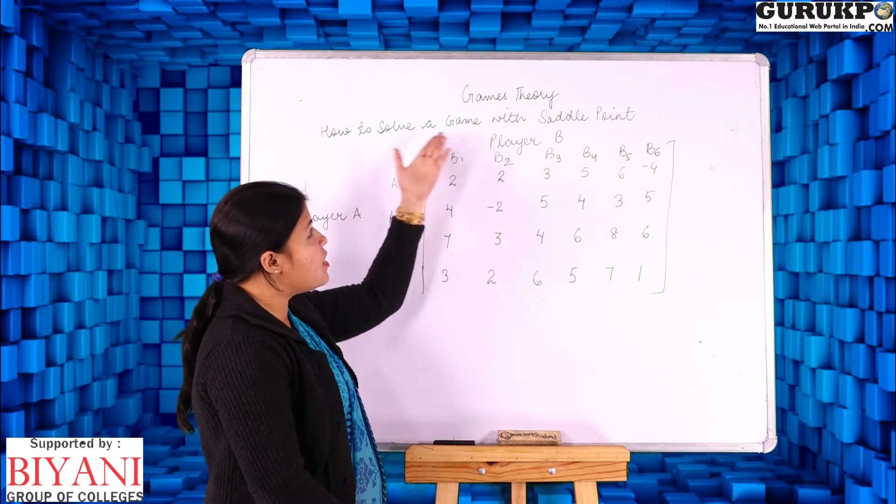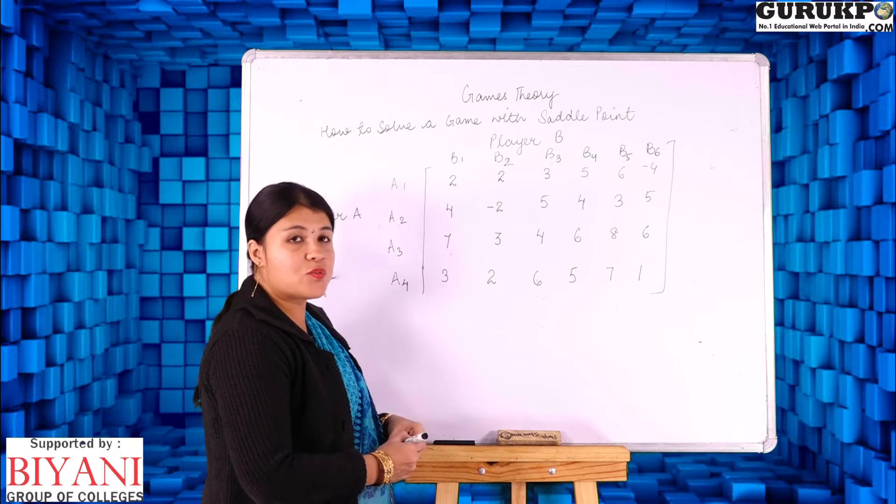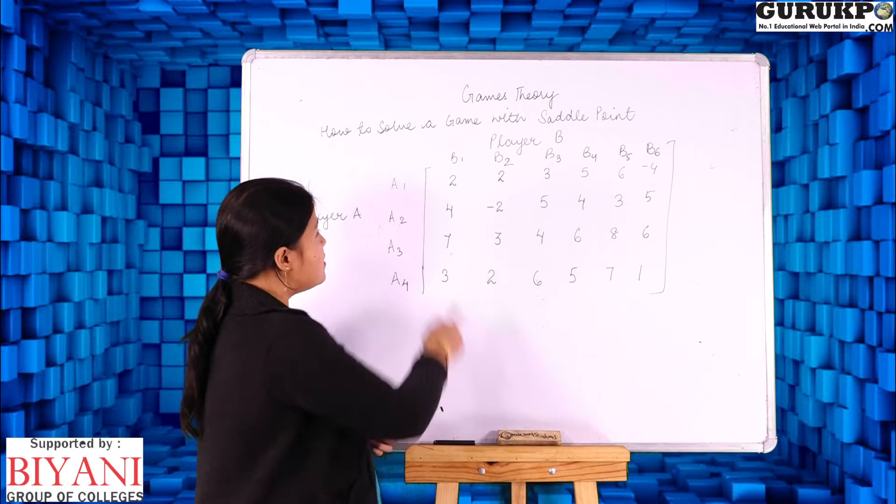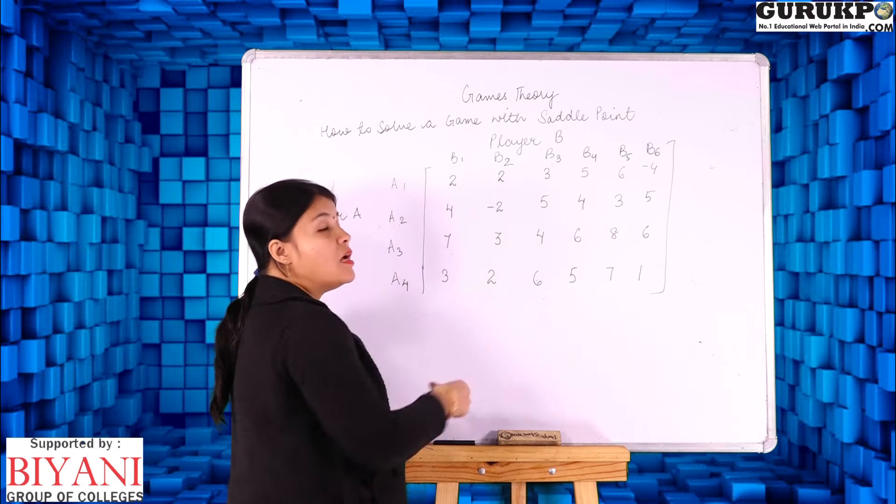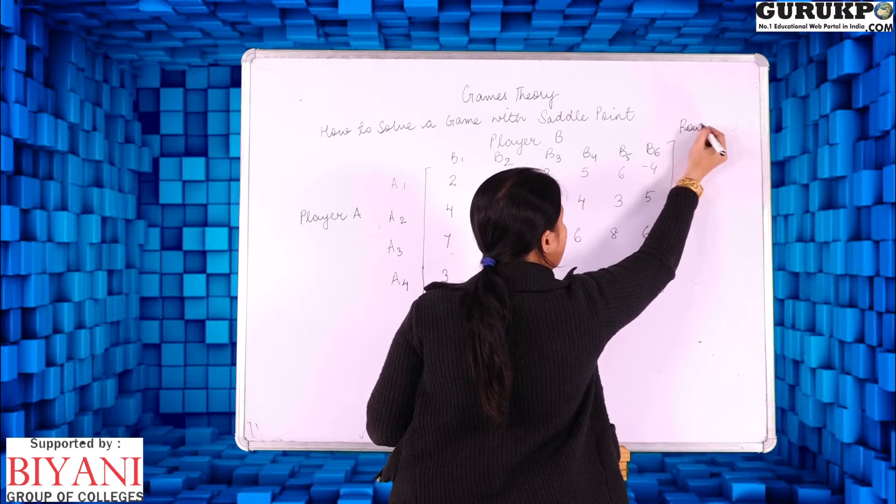Now how to solve a game with a saddle point. To arrive at a saddle point first we will calculate row minima. These are the strategies for row player. Now we are calculating row minima. First we will write here row minima.